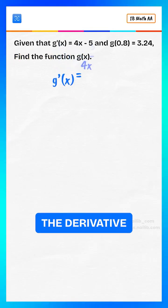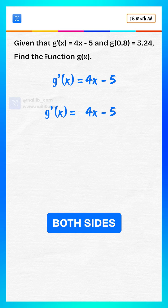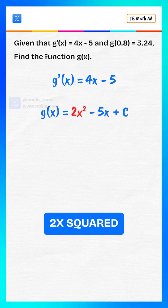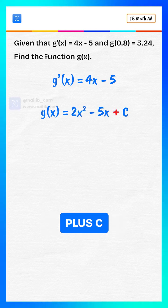We're given the derivative. To find g of x, integrate both sides, which gives us g of x equals 2x squared minus 5x plus c.